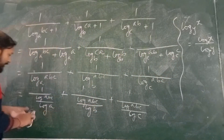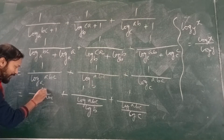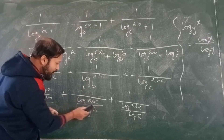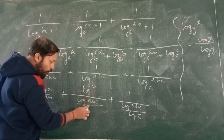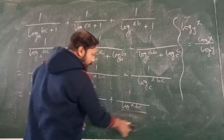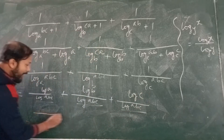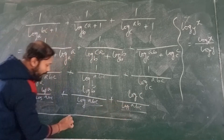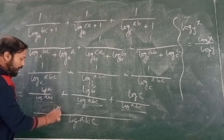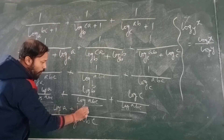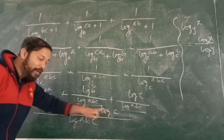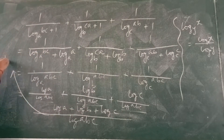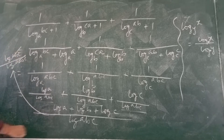After taking the reciprocal: log A divided by log BC, plus log B divided by log CA, plus log C divided by log AB. Taking LCM — the LCM of log BC, log CA, log AB. log A + log B + log C equals log ABC. So numerator becomes log ABC and denominator is log ABC. This cancels, so the answer is 1.